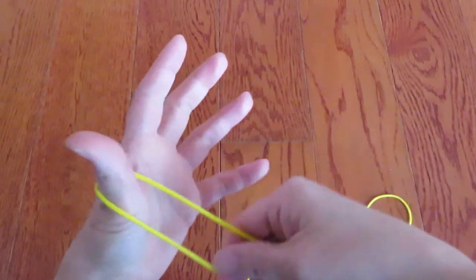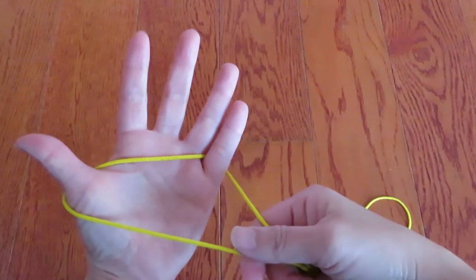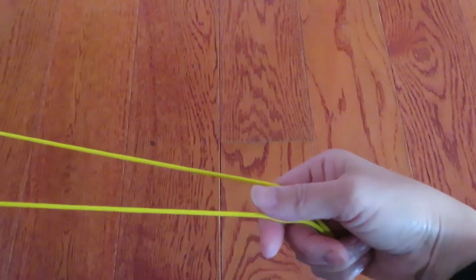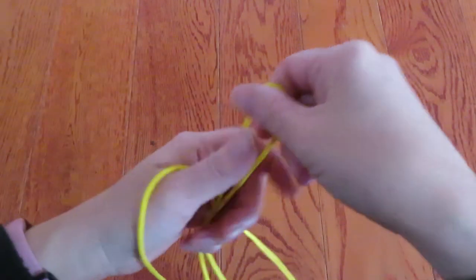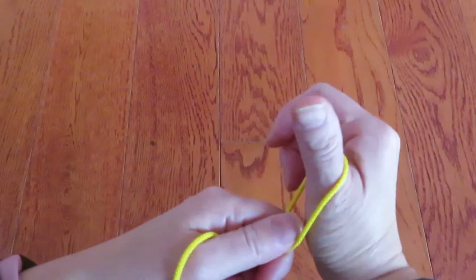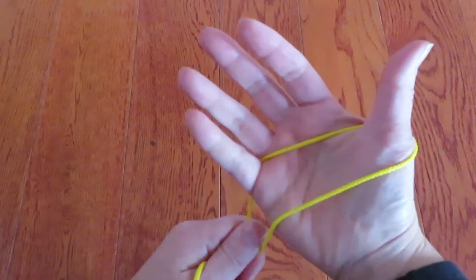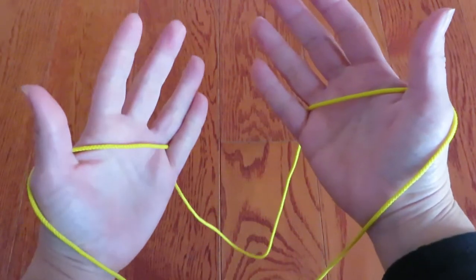Hook one end of the loop on your thumb and pinky, keeping the two strings parallel. Then hook the other end on your thumb and pinky like this.